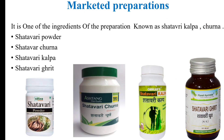Marketed preparations of Shatavari: it is one of the ingredients of the preparation known as Shatavari Kalpa Churnam. First is Shatavari Powder, second is Shatavari Churnam, third is Shatavari Kalpa, and fourth is Shatavari Ghrit.